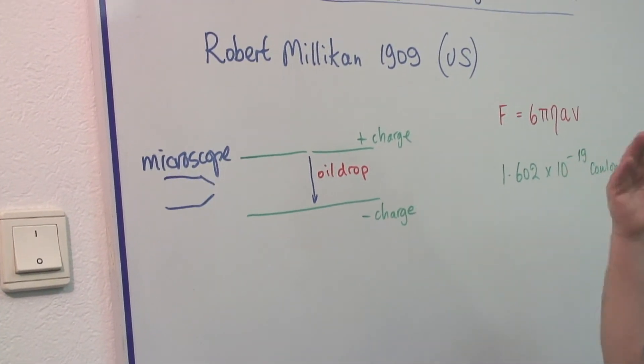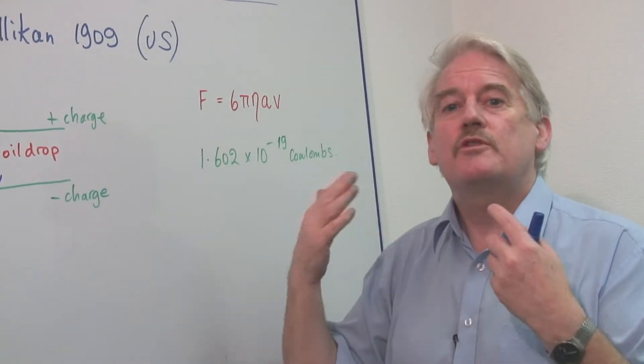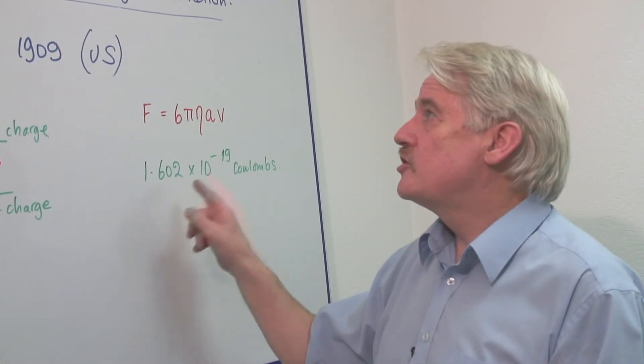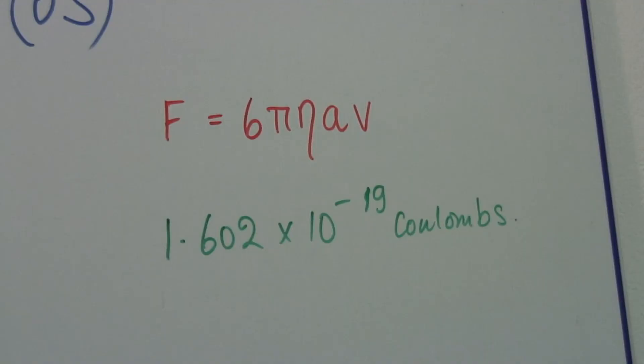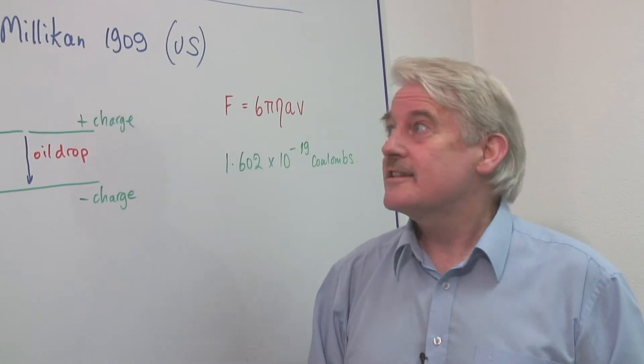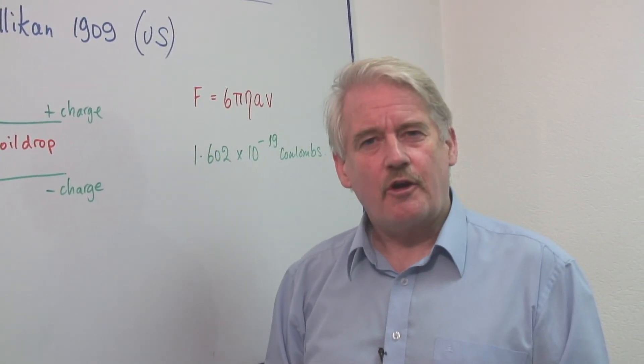If you do it with enough different particles, you can determine the charge on the particle. And, of course, it was Robert Millikan who did that way back in 1909, nearly a hundred years ago.